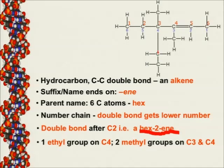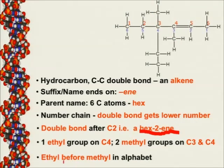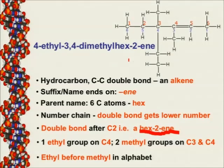The 'E' that comes before 'M' alphabetically is not going to determine the numbering of my carbons. The numbering for the alkene is determined by the double bond, not the substituent. The substituents will be there but they will not determine how I number my parent name. So at carbon number four I've got ethyl, at carbon number three I've got methyl, and at carbon number four I've got another methyl — therefore I put: 3,4-dimethyl... The full name is 4-ethyl-3,4-dimethylhex-2-ene.